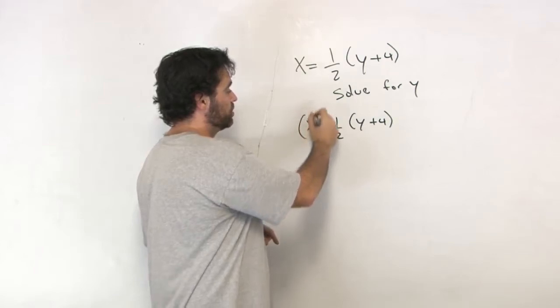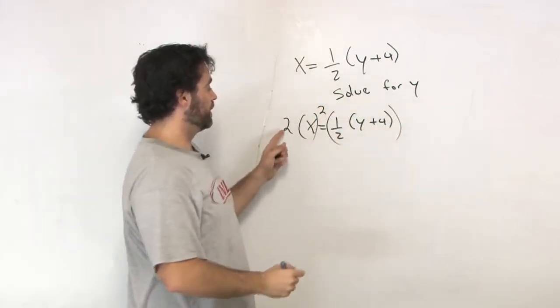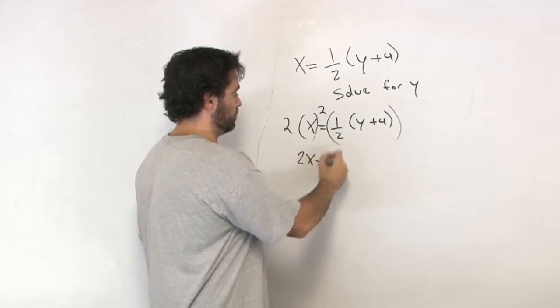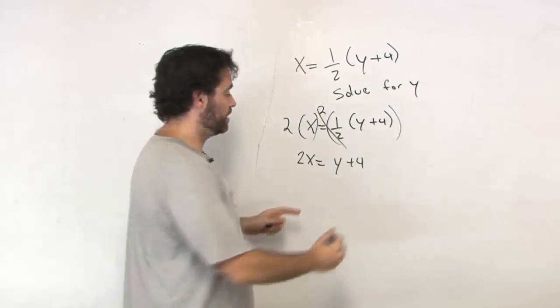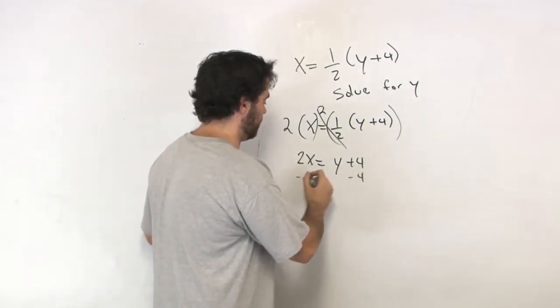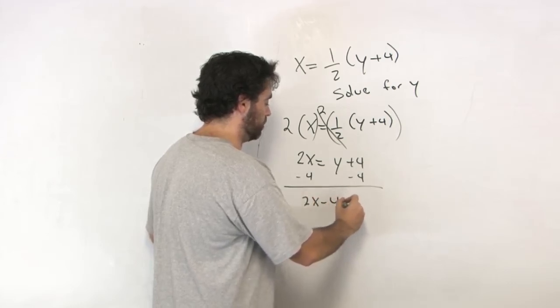That becomes 2x equals—the 2s cancel—so all we're left with is y plus 4. Remember we're solving for y. So I'm going to minus the 4. And we get 2x minus 4 equals y.